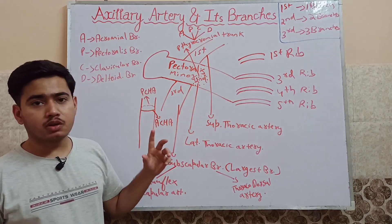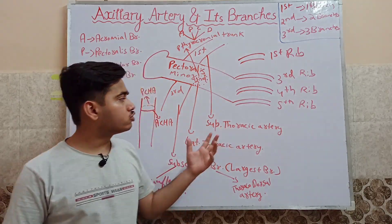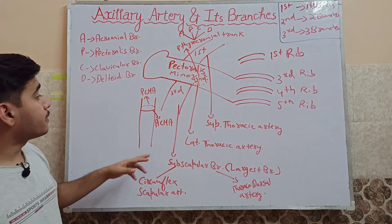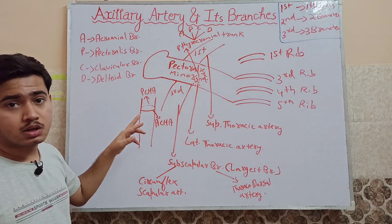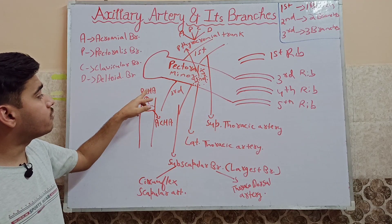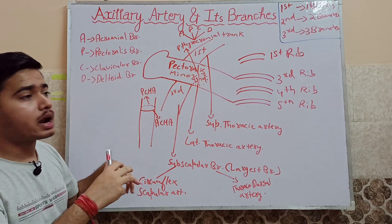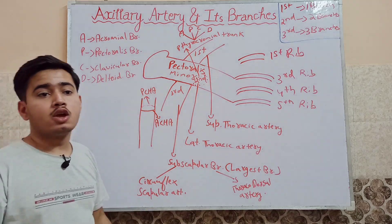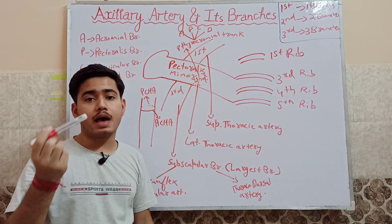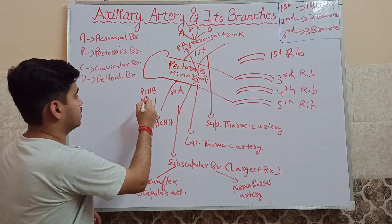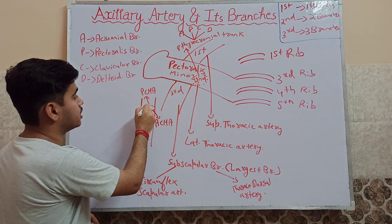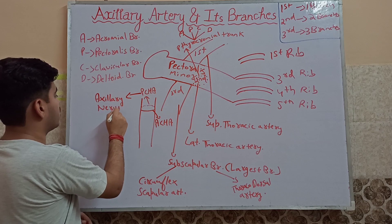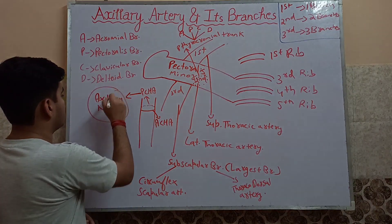From a clinical point of view, here is something important that you should know as a good doctor — and it can also be asked in exams. If there is a fracture of the surgical neck of the humerus around the posterior circumflex humeral artery — that is, at the posterior part of the surgical neck — the axillary nerve will get affected or damaged.